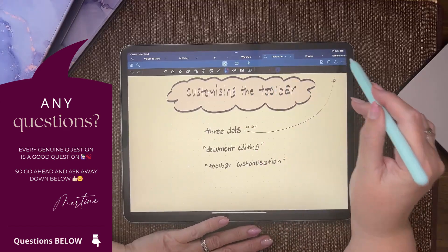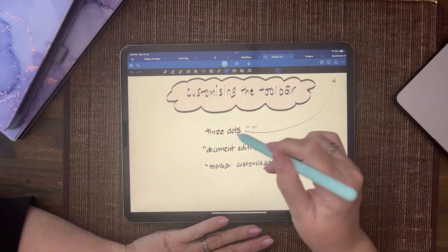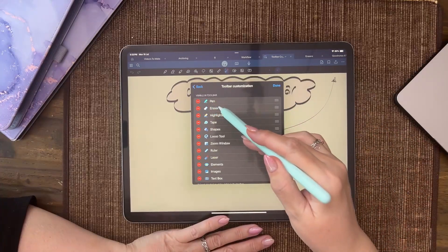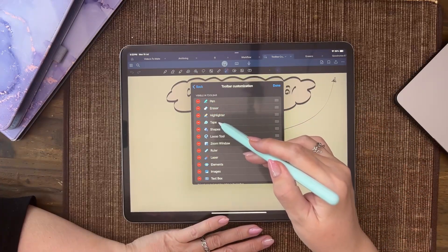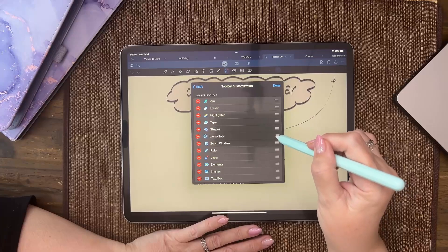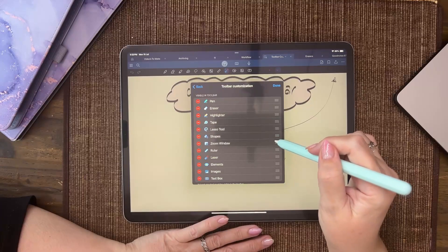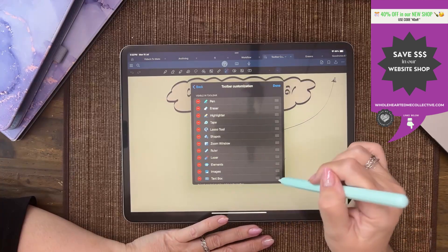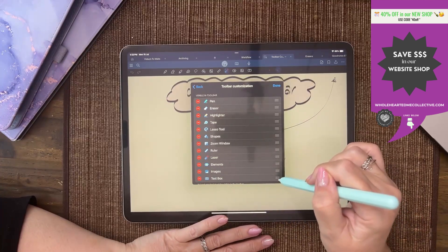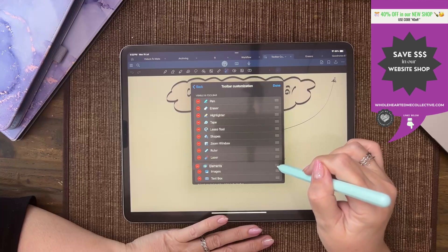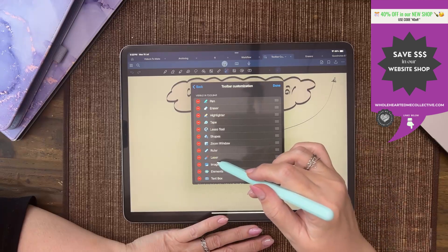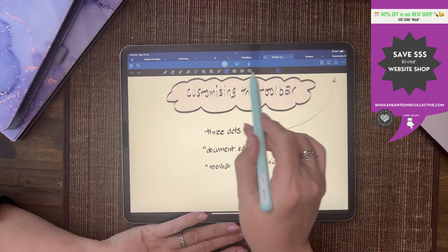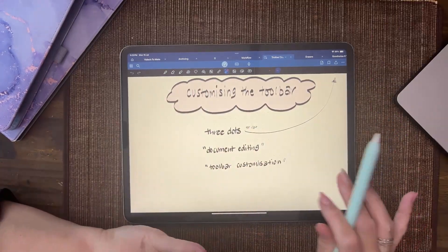Back into here: document editing, toolbar customization. So pen, eraser, highlighter—the tape is amazing—I use the lasso tool a lot, the shapes auto-complete is really cool, text box, elements, and then images. That's roughly how I organize my toolbar. Everyone's different, but if you want to customize your toolbar, you've got all those options.